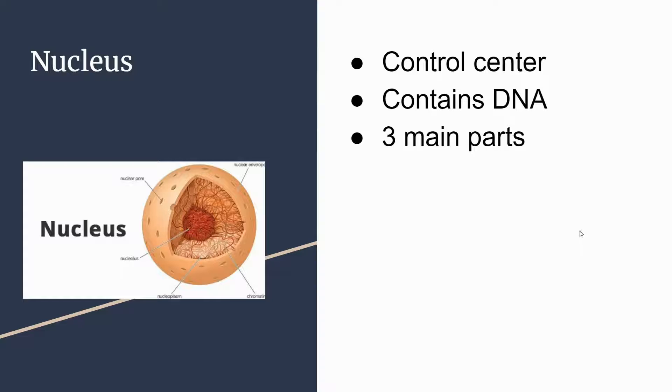The nucleus is the main control center, or the brain of the cell. It controls all of the other organelles, telling them what to do, and also contains the cell's DNA. The nucleus has three main parts: the nuclear envelope, the nucleolus, and the chromosomes or chromatin, which are the genetic material.